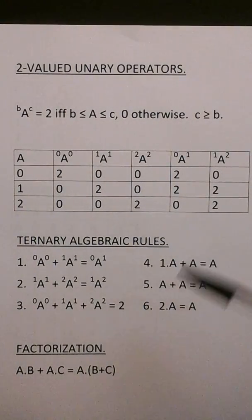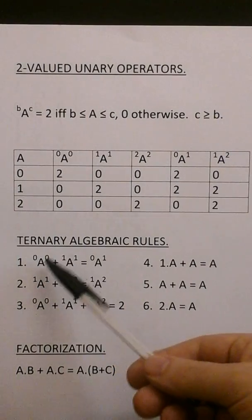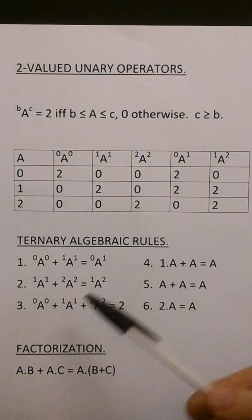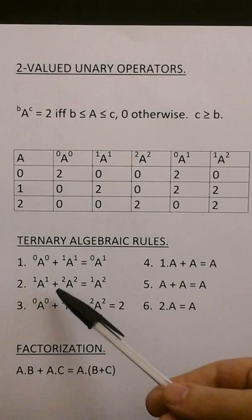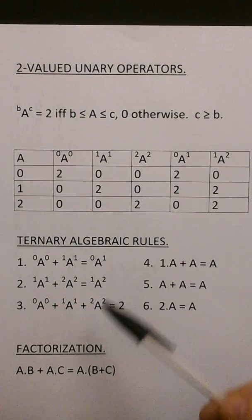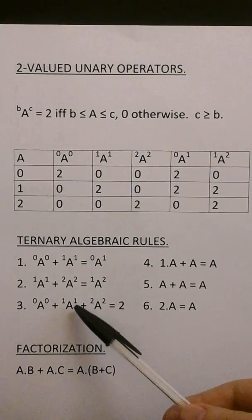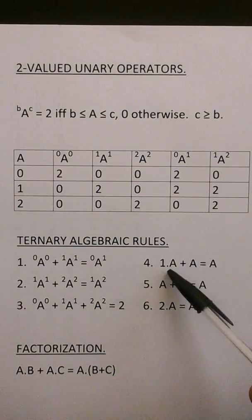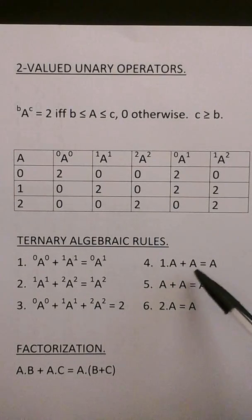Here's some ternary algebraic rules. A, 0, 0, max A, 1, 1 equals A, 0, 1. A, 1, 1, max A, 2, 2 equals A, 1, 2. A, 0, 0, max A, 1, 1, max A, 2, 2 equals A.